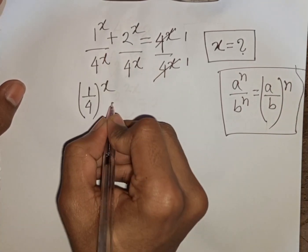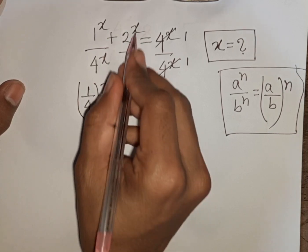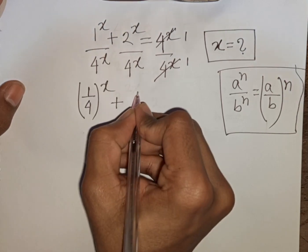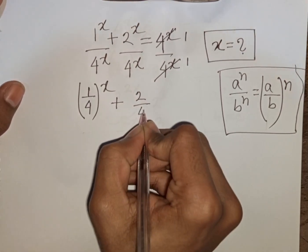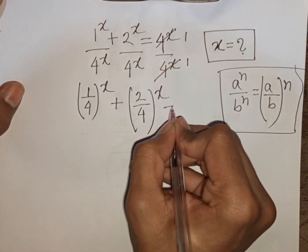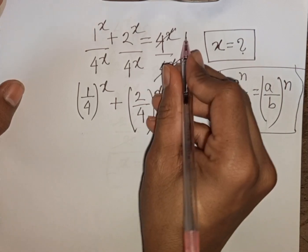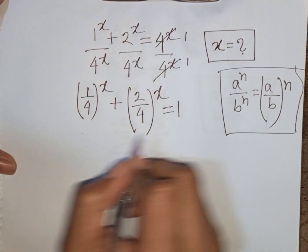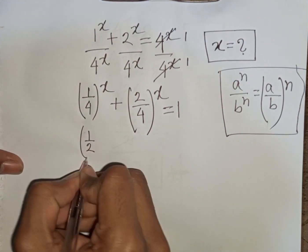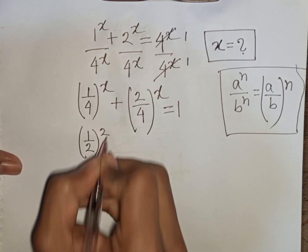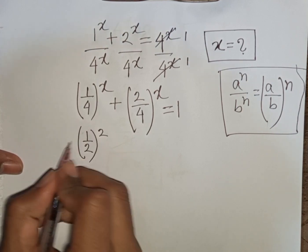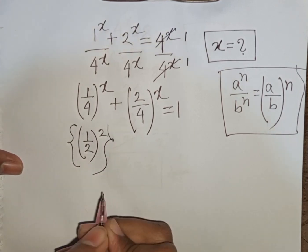Again, X has the same power but different base, so we apply the same formula, writing (2/4)^x. This gives us (1/4)^x plus (2/4)^x equal to 1. Now 1/4 can be written as (1/2)², since 1²=1 and 2²=4.